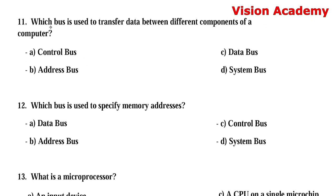Question number 11: Which bus is used to transfer data between different components of a computer? Option A: control bus. Option B: address bus. Option C: data bus. Option D: system bus. The right answer is Option B, address bus.